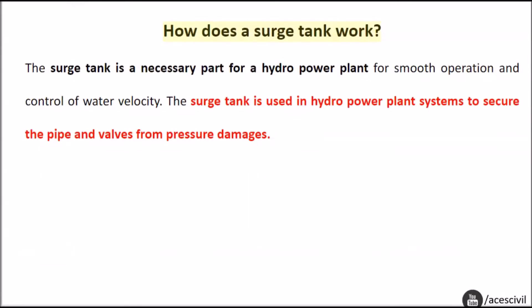How does a surge tank work? The surge tank is a necessary part for a hydropower plant for smooth operation and control of water velocity. The surge tank is used in hydropower plant systems to secure the pipe and valves from pressure damages.